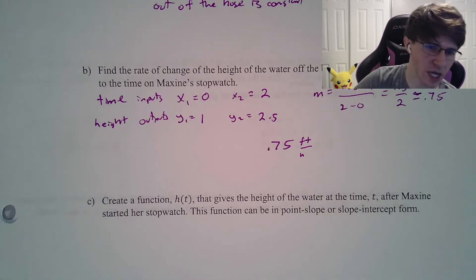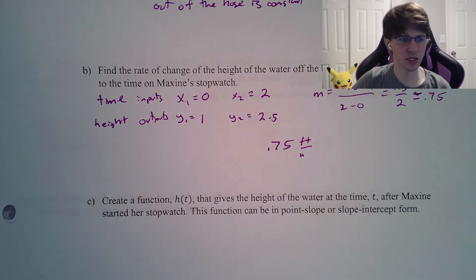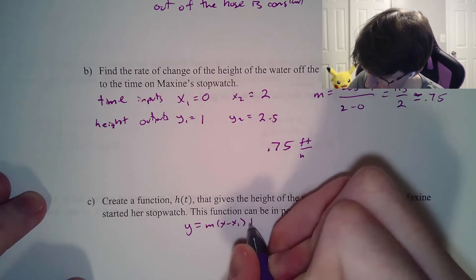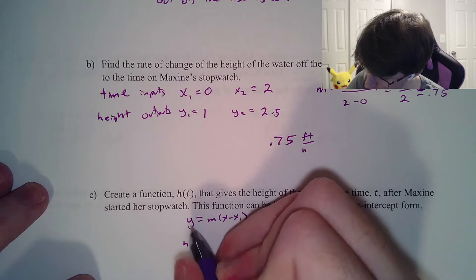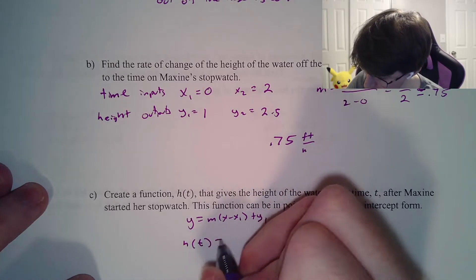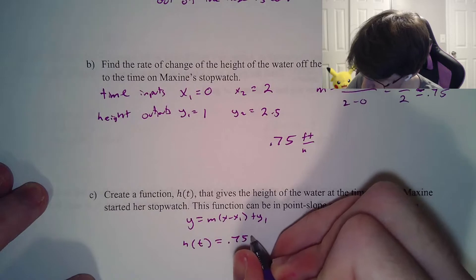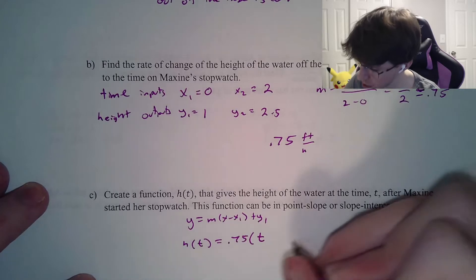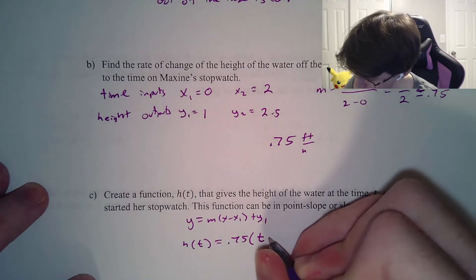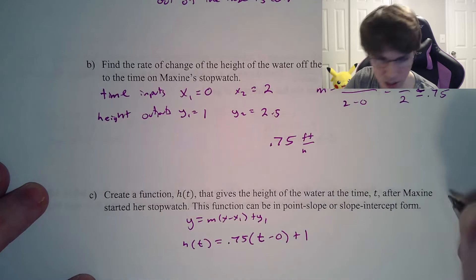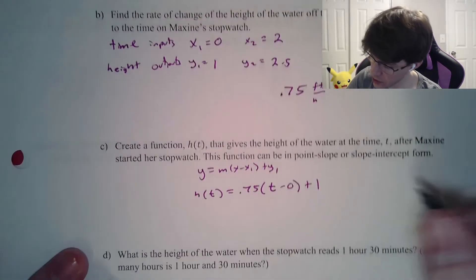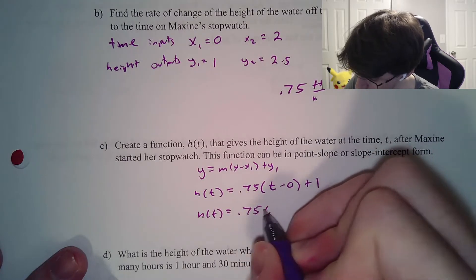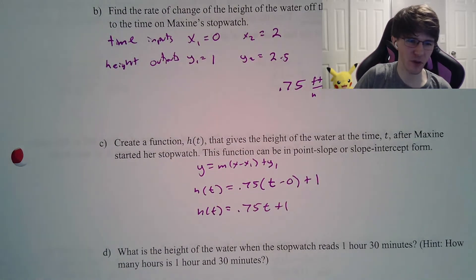Create a function h of t that gives the height of the water at time t. Using m times x minus x1 plus y1, our y is h of t, our slope is 0.75, the x value is actually t (time as input). Starting at time 0, original height is 1. The slope-intercept version is h of t equals 0.75t plus 1 — we don't need to write the minus 0.